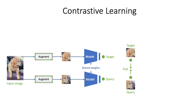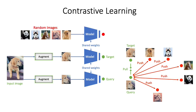In contrastive learning, an unlabeled input image is augmented twice to get two different views. These views are then passed through the model to get their corresponding representations. The goal is to pull these representations closer. But the model can do this trivially by simply producing the same representation regardless of the input. To prevent this collapse of representations, we need another ingredient called contrast.